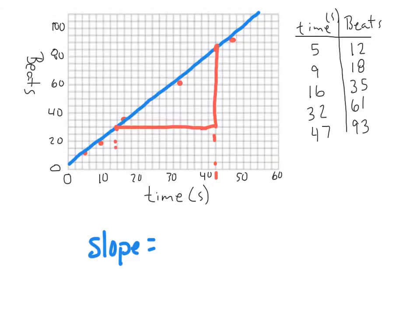And down here, it's at 14. So the difference in my x-axis is going to be 42 minus 14, which is 28 seconds.